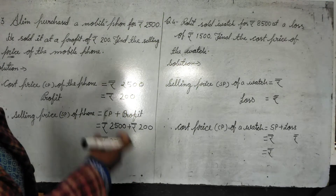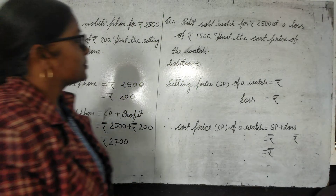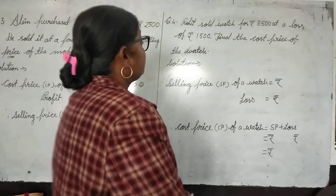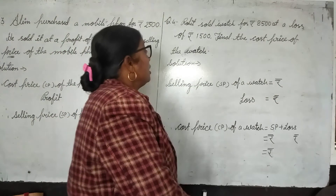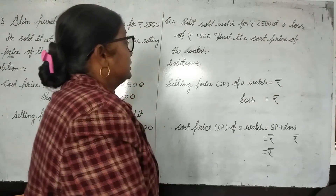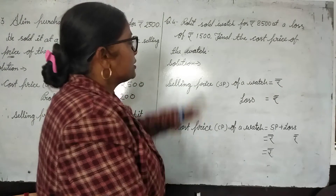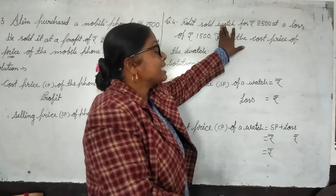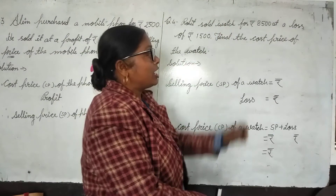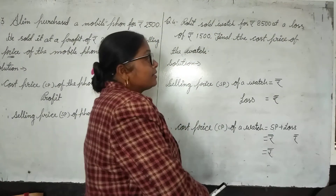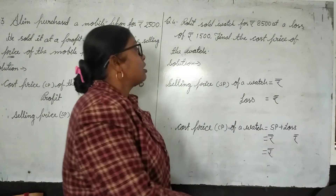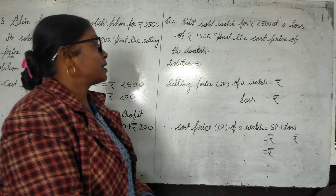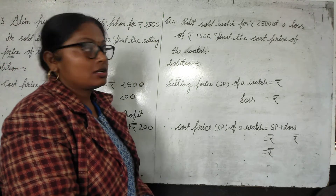So let's start the next question. Rupees: a watch was sold for rupees 8500 at a loss of rupees 50. Find the cost price of the watch.